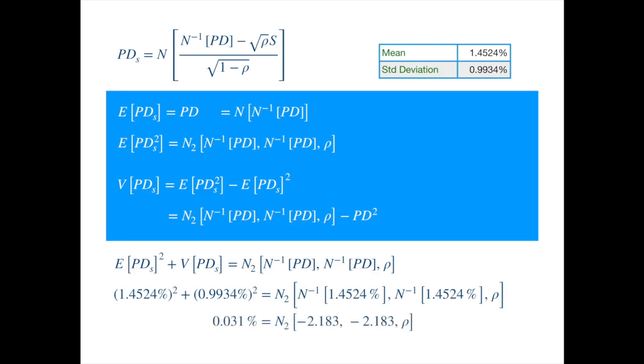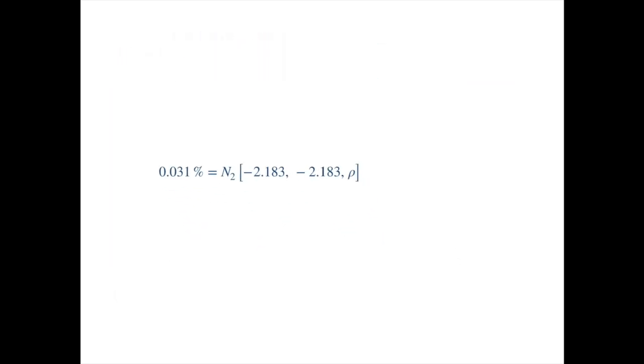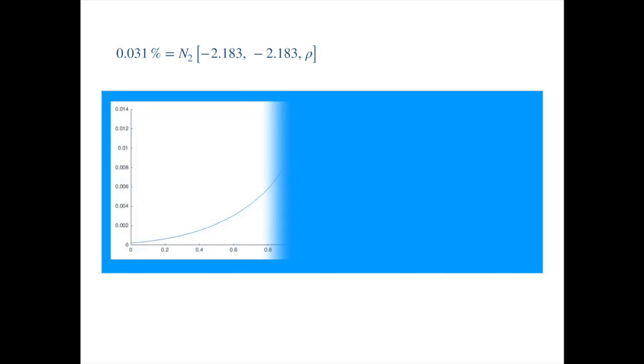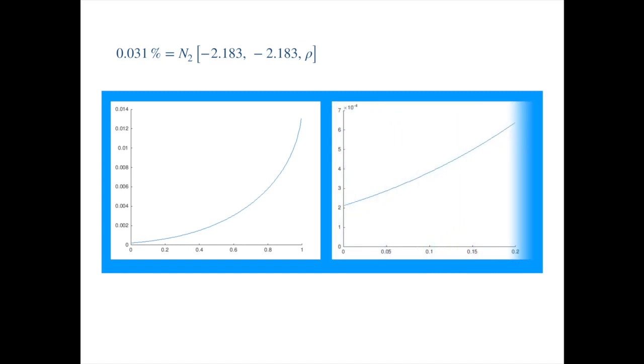So we have only one unknown parameter, which is not hard to calculate. To help visualize the calculation, we plot the bivariate normal probability for the given values as a function of rho. The zoomed-in version focusing on the lower part is as follows. And we can easily look up the value of the rho that would produce the required probability.